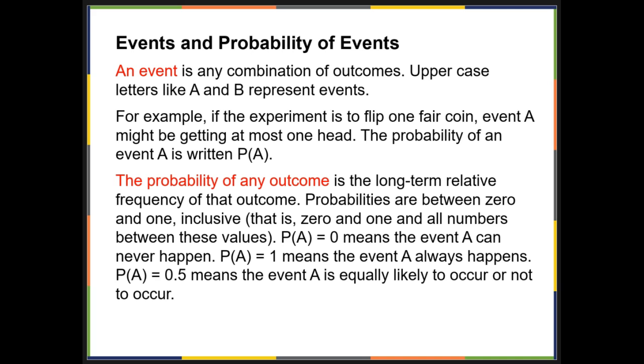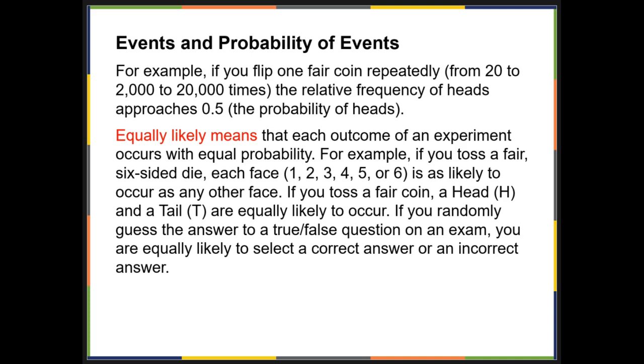One means it always happens, and 0.5 means that it's equally likely to occur or not to occur. Let's take a look at an example. If you flip a fair coin repeatedly, from 20 to 2,000 to 20,000 times, the relative frequency of heads approaches 0.5, that's the probability of heads.